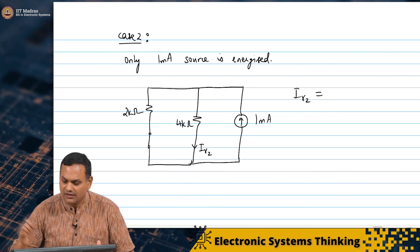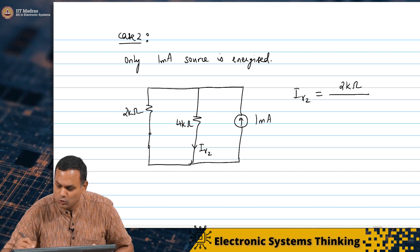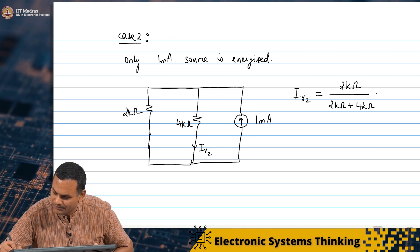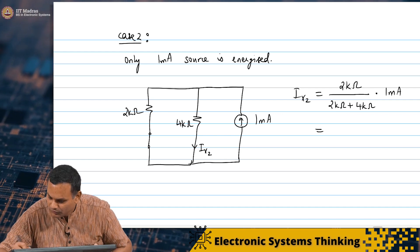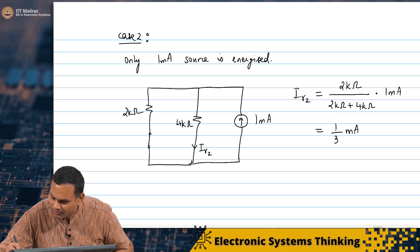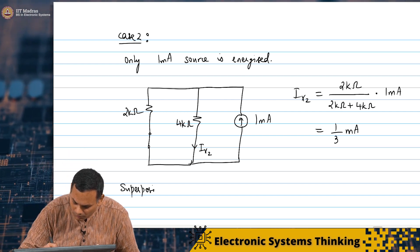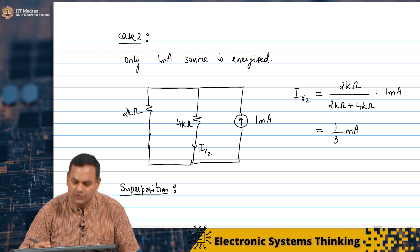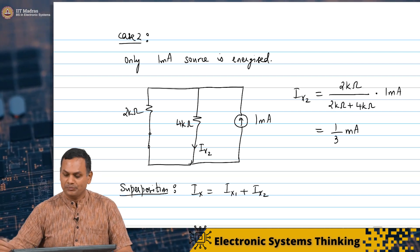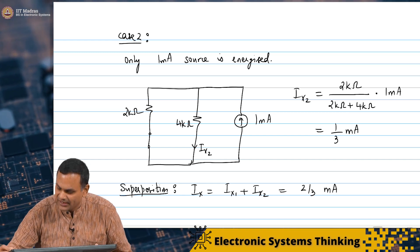I am interested in the current through the 4 kilo ohm resistor, so that has to be the 2 kilo ohm resistor over 2 kilo ohms plus 4 kilo ohms times the actual current, which is 1 milliamp. This current is again 2 by 6, which is 1 by 3 milliamperes. Now applying superposition, the actual current is IX1 plus IX2, which is 1/3 milliamperes plus 1/3 milliamperes, or 2/3 milliamperes.